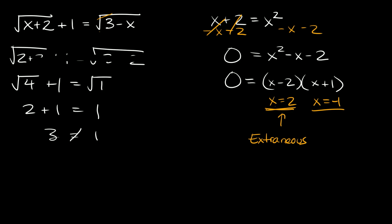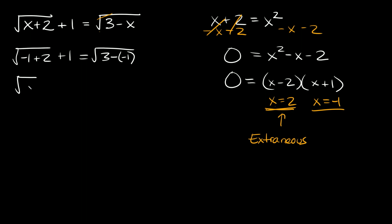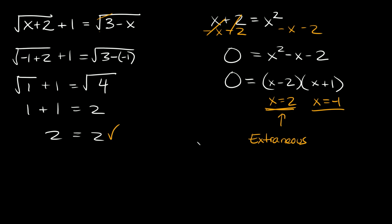Now let's test our other solution, x equals negative 1. Plugging in: the square root of negative 1 plus 2 plus 1 equals the square root of 3 minus negative 1. That gives the square root of 1 plus 1 equals the square root of 4, so 1 plus 1 equals 2, giving us 2 equals 2. That's a true statement, so x equals negative 1 is a true solution — and it's our only solution since x equals 2 was extraneous.